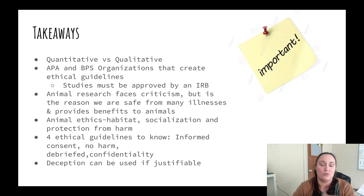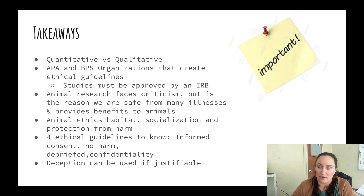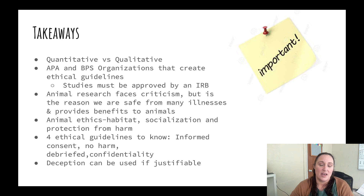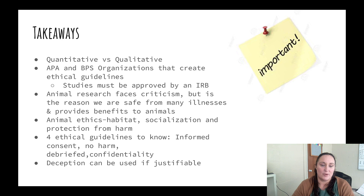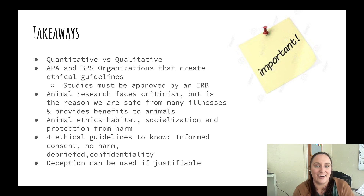Takeaways: remember the difference between quantitative and qualitative research design. The APA and BPS create ethical guidelines, and an Institutional Review Board determines if those guidelines are being followed. Animal research faces criticism but is also why we are safe from many illnesses and benefits animals themselves. There are four ethical guidelines for human research. Remember that deception can be used if it is justifiable. That sums up module 0.5 — see you in class!